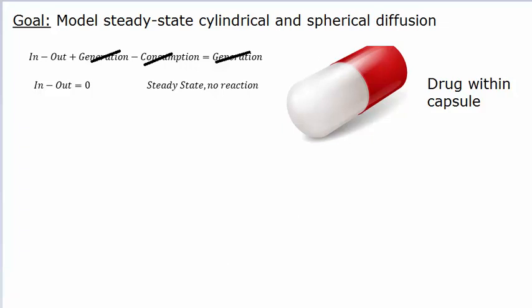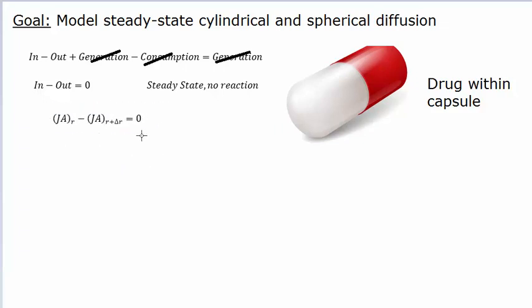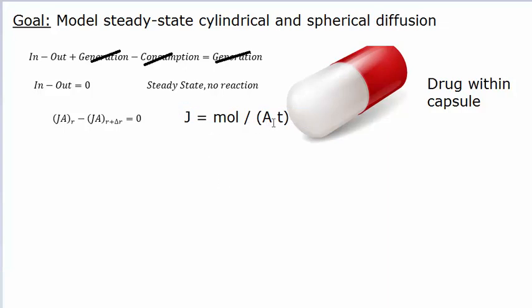When the drug goes out of the capsule, it's just going to be diffusing through your bloodstream. This allows us to write the mathematical expression for our generalized mass balance. J is your diffusive flux and A is your area. J is in terms of moles per area per time, and A is in terms of area. So whenever you're writing a generalized material balance, it needs to be in terms of moles or mass per time. Multiplying by the area allows us to cancel out the area and say the balance is in units of material per time. We're evaluating this at R and at R plus delta R.